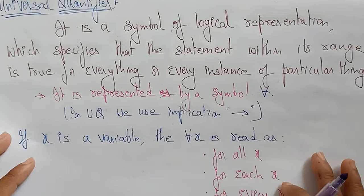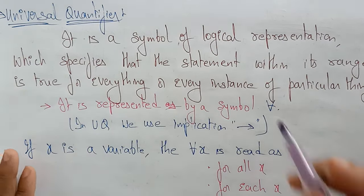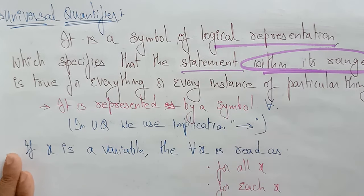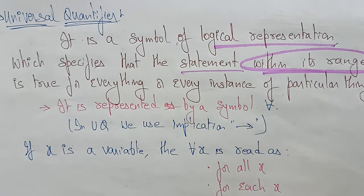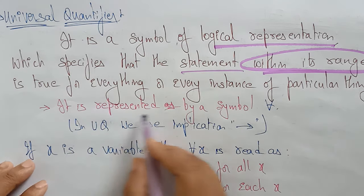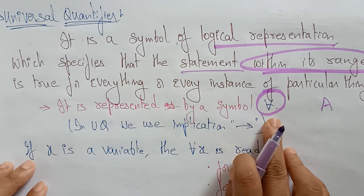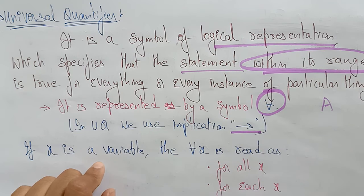The universal quantifier is a symbol of logical representation which specifies that a statement within its range is true for everything or every instance of a particular thing. The symbol for the universal quantifier is the reverse of the letter A, representing 'for all.'